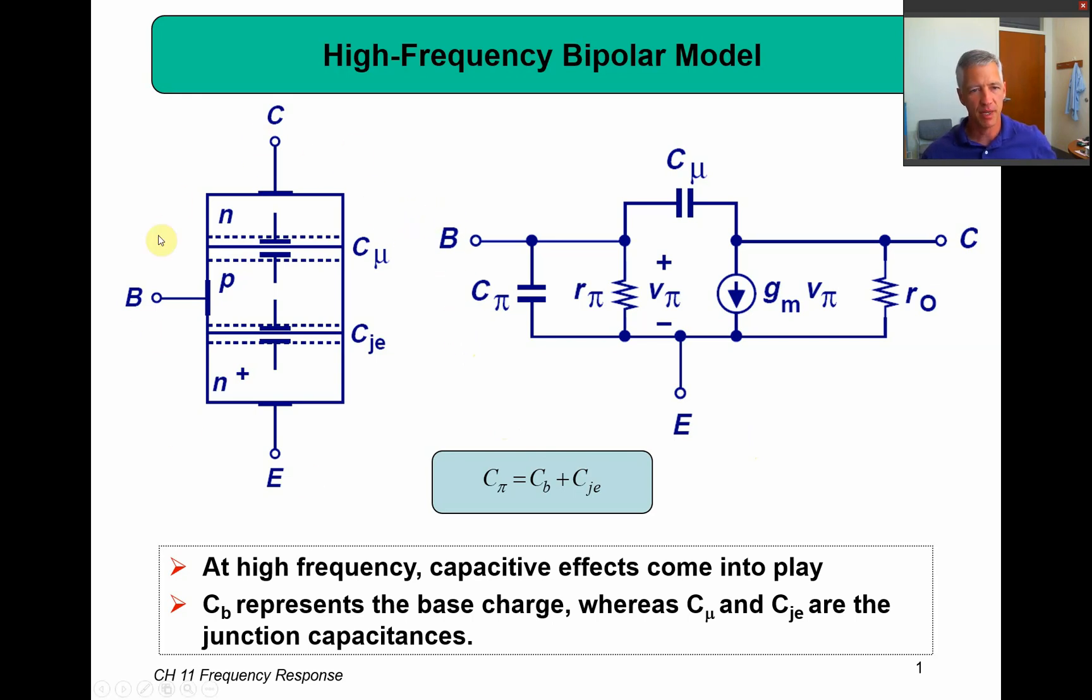Here is our basic BJT. It has an N region, a P region, and an N region for our NPN transistor. Every time we had a depletion region between an N and a P region, because of the diffusion, I get a buildup of positive and minus charges across this depletion. Whenever you get a buildup of charges across two parallel regions, that becomes a capacitor. So I have one capacitor right here between this junction and one capacitor right here in this junction.